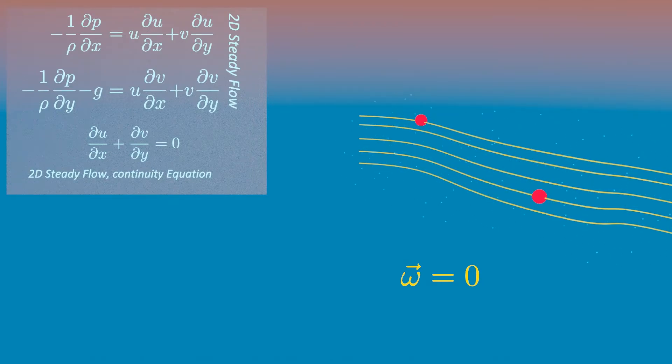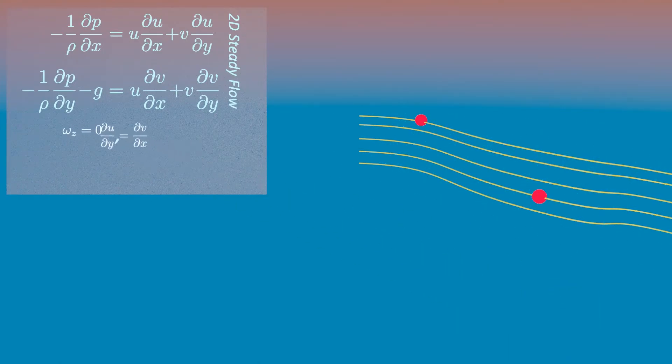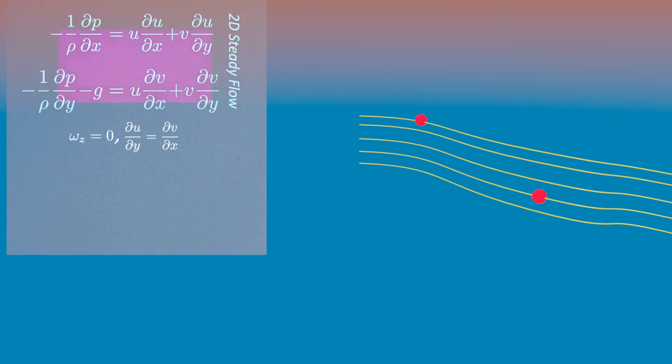To show this, assume we have irrotational, two-dimensional flow, so that angular velocity at z component equals zero. This means... Substitute this condition into Euler equation, you will obtain...